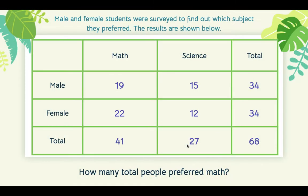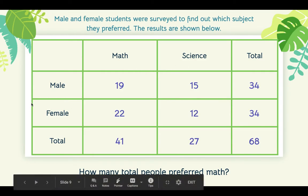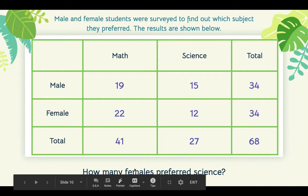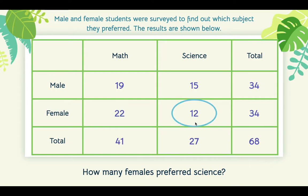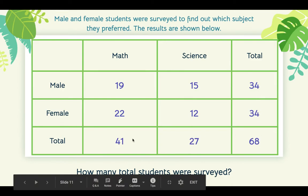Now let's have you try. Male and female students were surveyed to find out which subject they preferred. The results are shown below — we have math, science, male or female, and the totals. The bottom corner is typically a grand total of students surveyed. How many people preferred math? That includes both males and females, so our answer is 41. How many females preferred science? We look at females and science — 12. How many total students were surveyed? You can add the four values to get 68, or add 34 and 34, or add 41 and 27 — all equal 68.